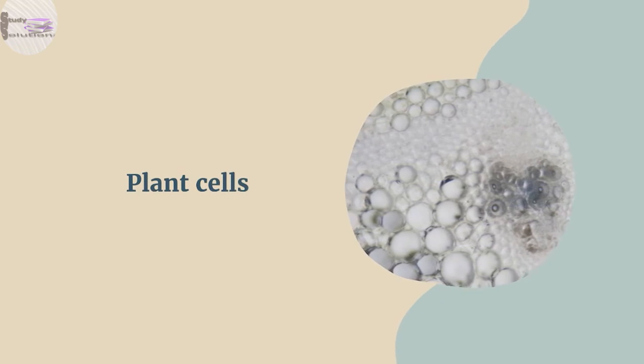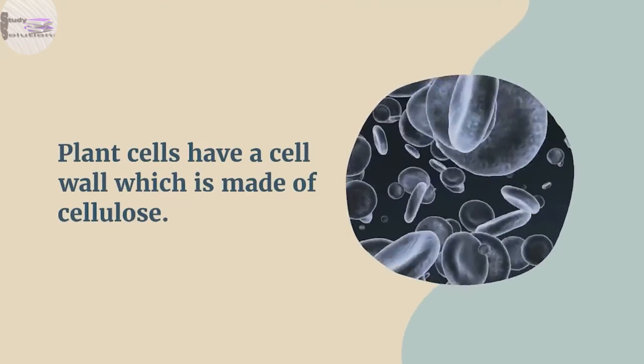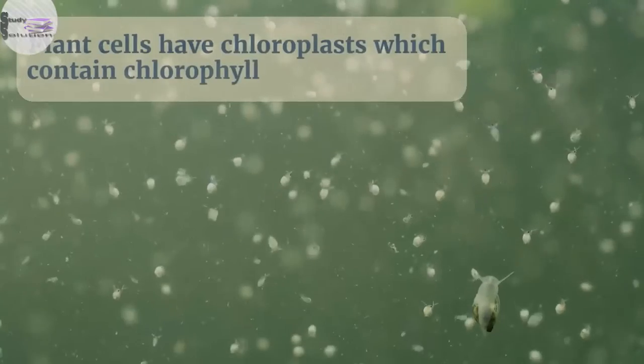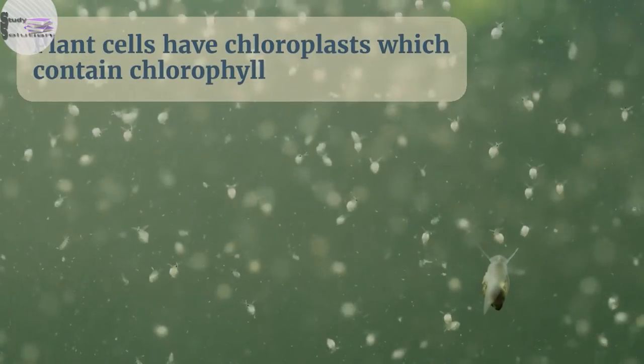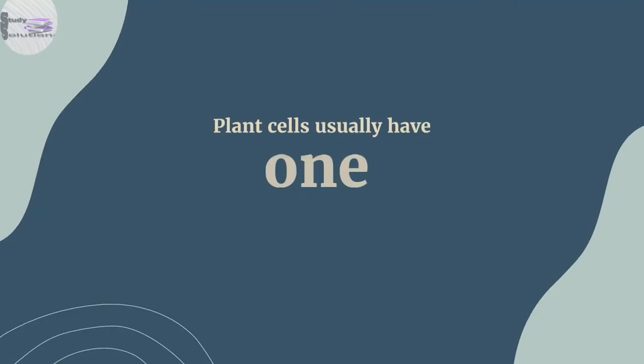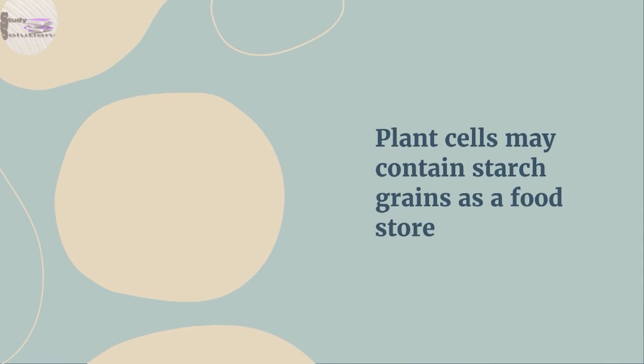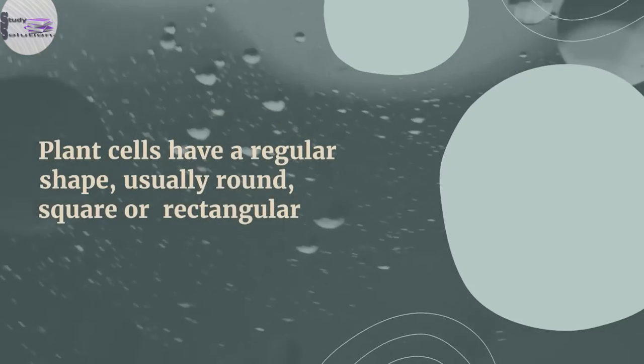Plant cells have a cell wall which is made of cellulose. Plant cells have chloroplasts which contain chlorophyll. Plant cells usually have one large central vacuole which contains cell sap. Plant cells may contain starch grains as a food store. Plant cells have a regular shape, usually round, square or rectangular.